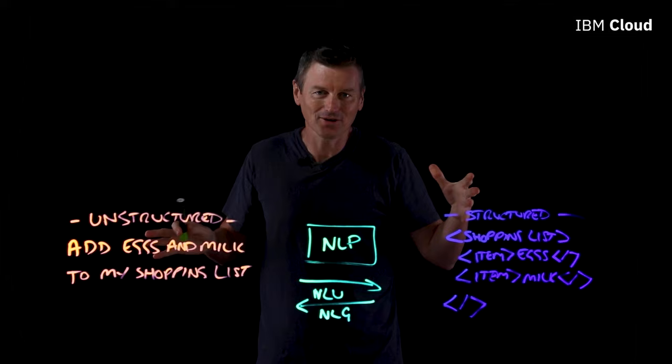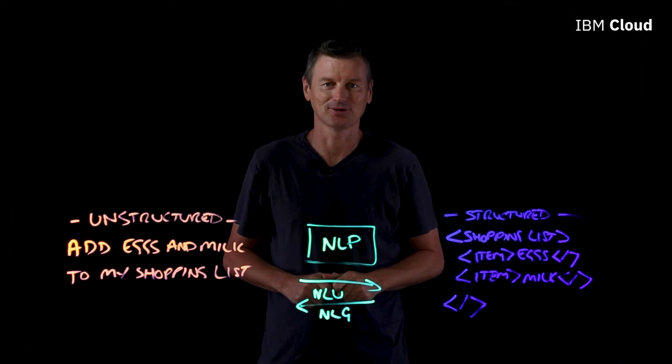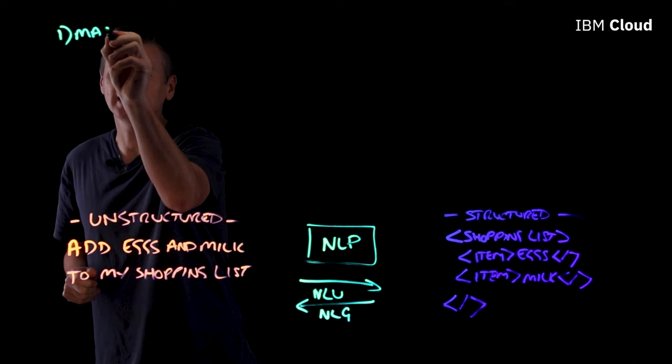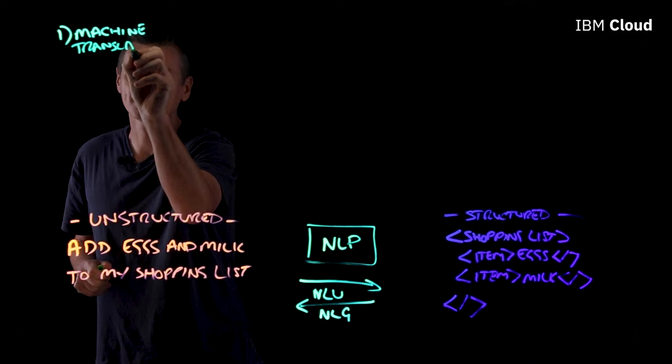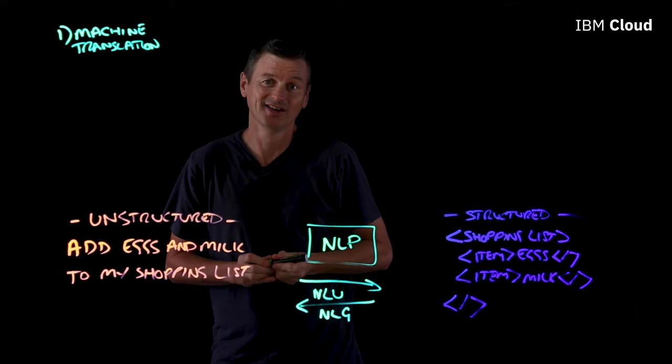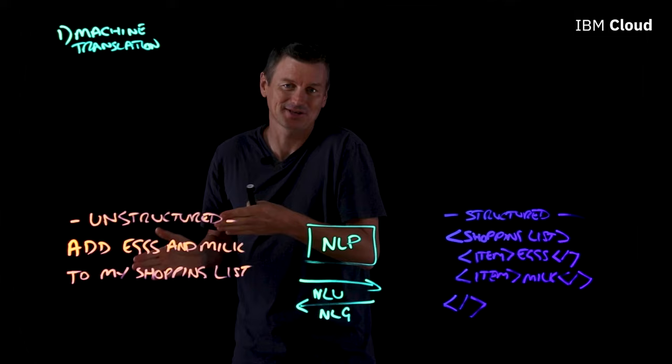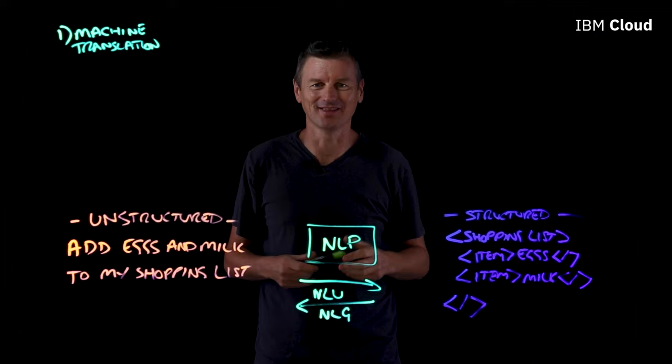We're going to focus today primarily on going from unstructured to structured in natural language processing. Let's think of some use cases where NLP might be quite handy. First of all, we've got machine translation. When we translate from one language to another, we need to understand the context of that sentence — it's not just a case of taking each individual word from, say, English and translating it into another language. We need to understand the overall structure and context of what's being said.